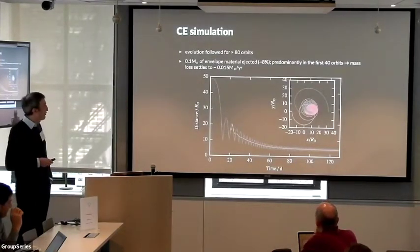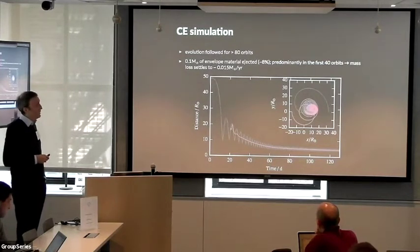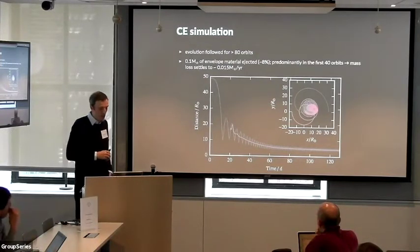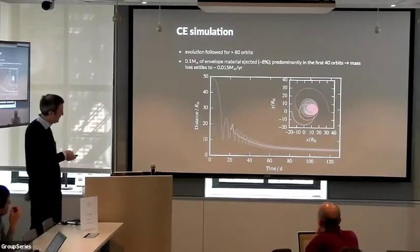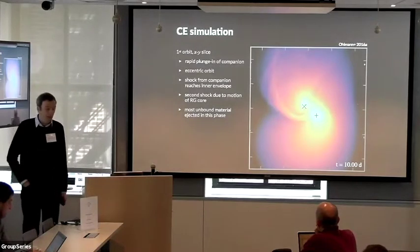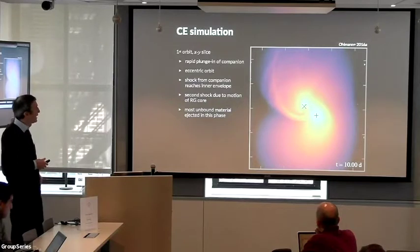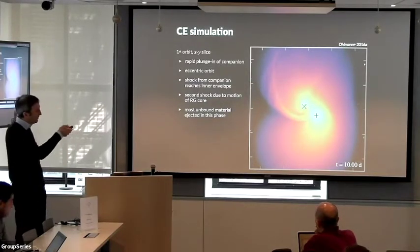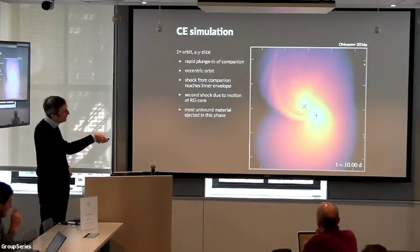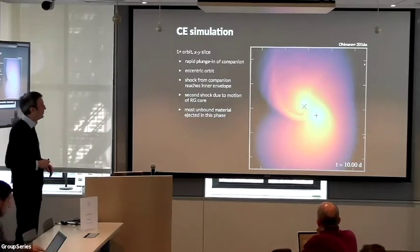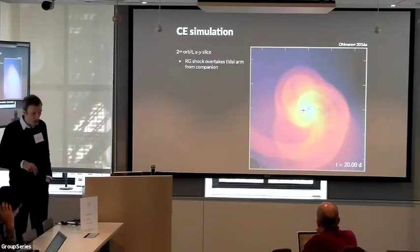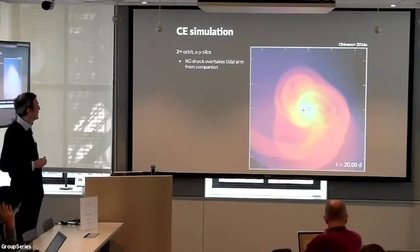And the outer envelope actually develops this complicated morphology. We followed the evolution in this particular setup for about 80 orbits and only 0.1 solar masses of the envelope was ejected. That's 8 percent of the envelope was ejected predominantly in the first two orbits. And this is how the orbital distance has changed very similar to what other simulations find as well. Now, one can characterize the evolution of the envelope in different phases. The first is the rapid plunge-in phase in the first orbit. So, this then leads to an eccentric orbit of the two star cores and the shock from the companion star reaches the inner part of the envelope around the red giant core and a tidal arm forms. And most of the material that finally gets unbound is already ejected in this first orbit.